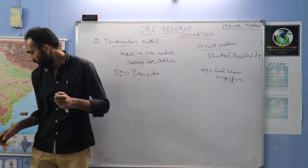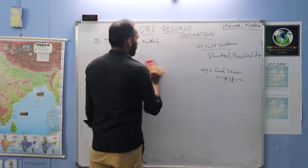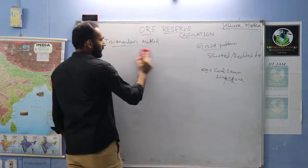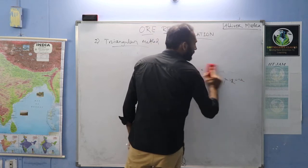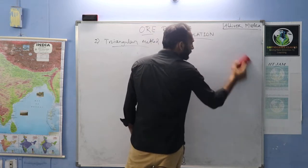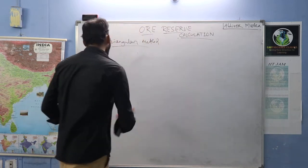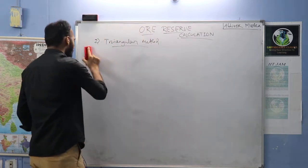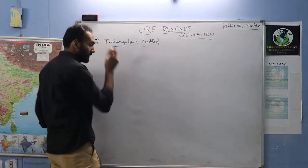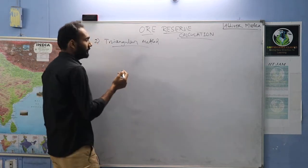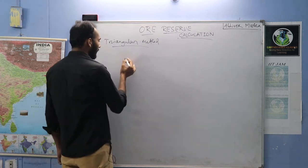Same as you have done in the grid pattern, you have to plot boreholes. In the grid pattern, the boreholes are at the vertices of rectangles or squares. But in the triangular method, the boreholes will form the vertices of triangles.